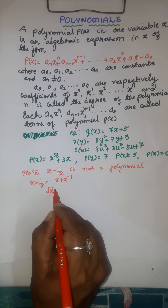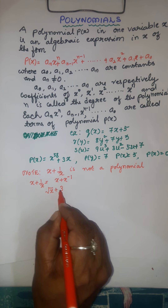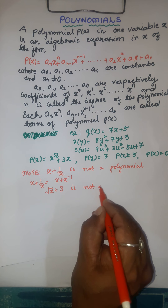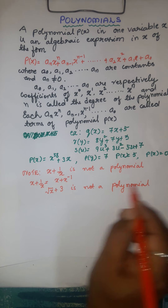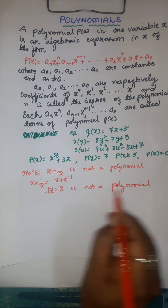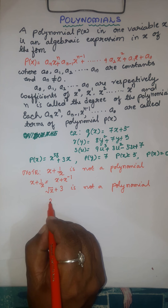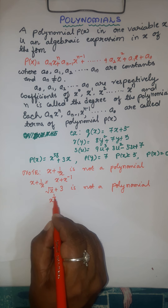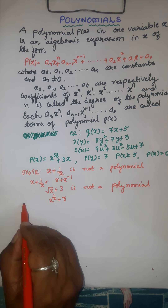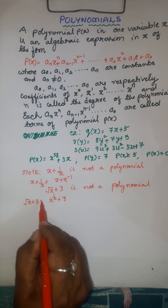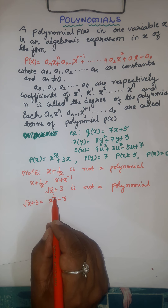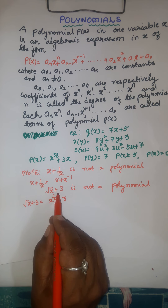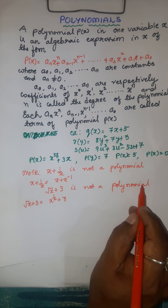Again, square root of x plus 3 is not a polynomial. The root symbol can be written as x to the power of 1 by 2 plus 3, so root x plus 3 equals x to the power of half plus 3. The power of x is a fraction — it is not a positive integer — therefore root x plus 3 is not a polynomial.